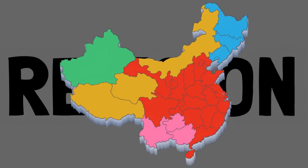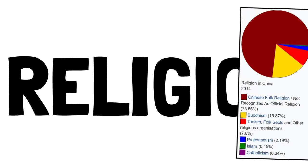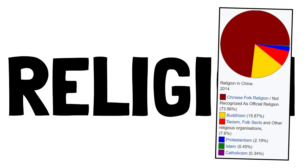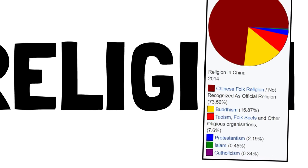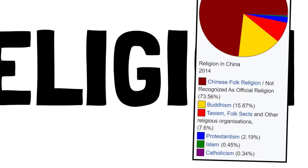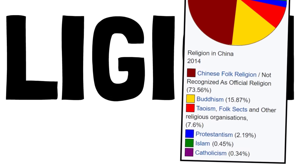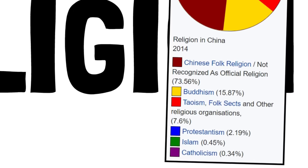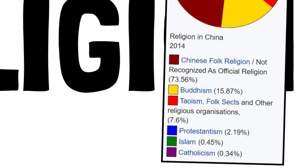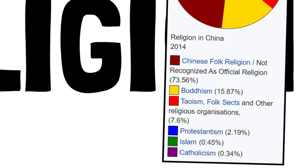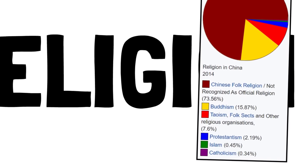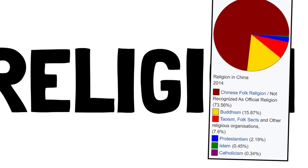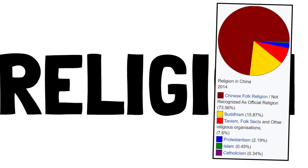The map on the thumbnail is a little simplified, but it illustrates an important point. China has various religions within it, and they vary a lot depending on the territory. Chinese folk religion represents about 73% of the people. Buddhism is next with 15%, then Taoism at 7%, Protestantism at 2%, Islam at 0.5%, and Catholicism at 0.3%. Despite having very low values overall, these are sometimes more prevalent in specific regions and represent majorities in some of them.